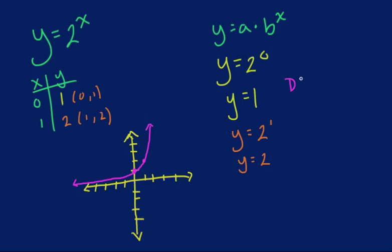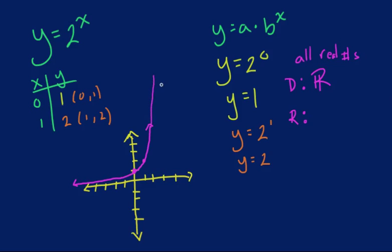They might also ask you about domain and range. If you have questions, click the link provided. The domain here covers your x values. As we can see, the graph is continuously growing, getting wider and wider across the x values. So we use all real numbers for the domain, meaning all x values can be an answer as the graph extends in both directions.